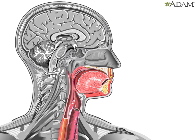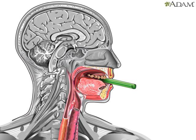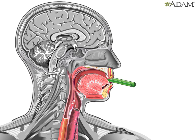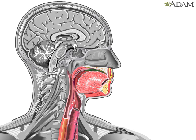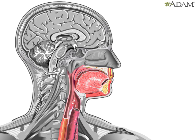This side view of the head highlights structures involved with swallowing. That includes the tongue, teeth, epiglottis, and esophagus. The teeth grind and chop food into tiny pieces, while the glands in the mouth moisten it with saliva. Then the tongue pushes the moistened food, or bolus, to the back of the throat and down into the esophagus, which leads to the stomach.